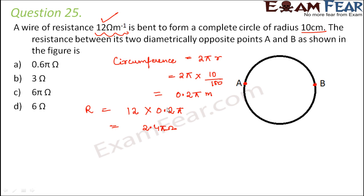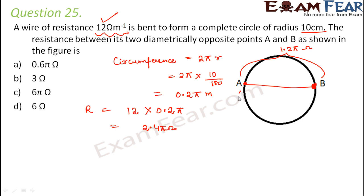Now we have to calculate the resistance between points A and B. Since A and B are diametrically opposite points, they divide the entire circumference into two equal halves. These two arcs — arc AB and arc BA — are two equal arcs. So if the total resistance is 2.4π, then each half would be 1.2π ohms, that is half of 2.4π.